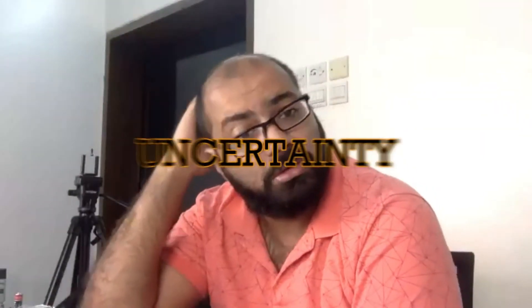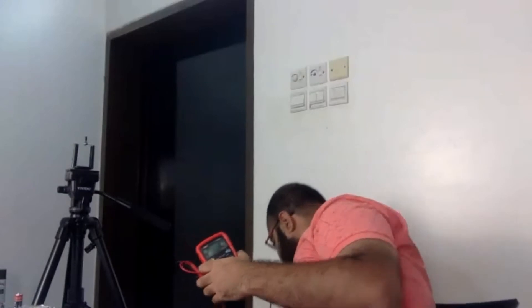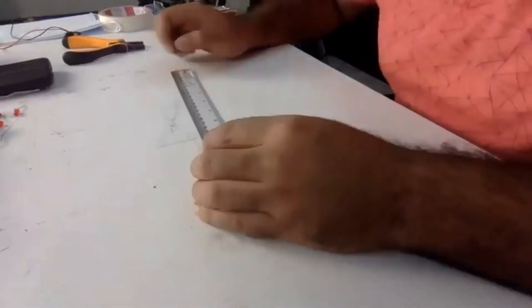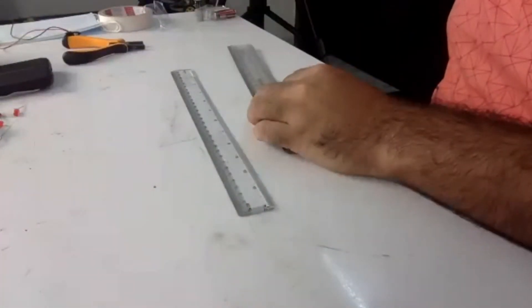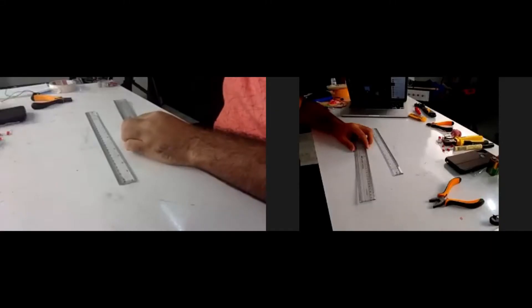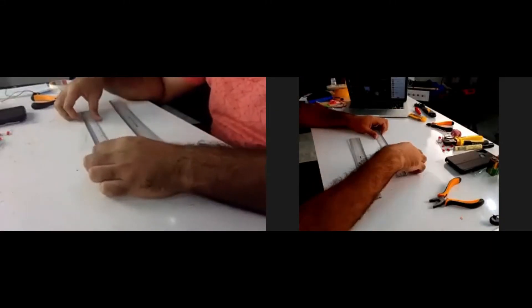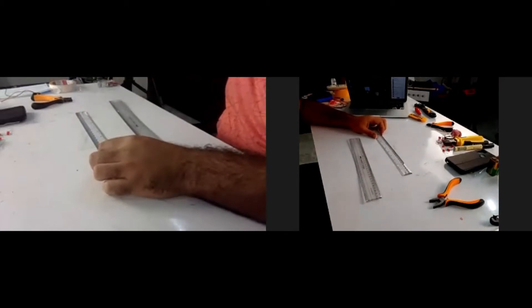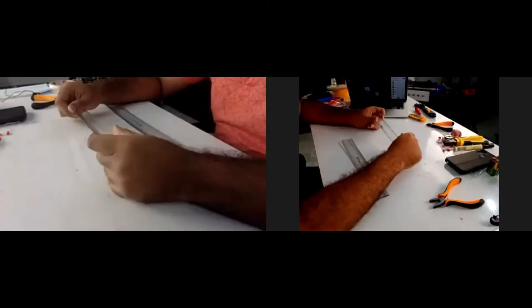So today we're going to talk about something called uncertainty and I'll be explaining it visually. The thing about uncertainty is if you don't understand it well the first time, it becomes a pain. I have one request for you guys and that is make sure you pay as much attention as possible. I'll be doing it using materials.